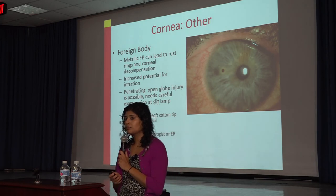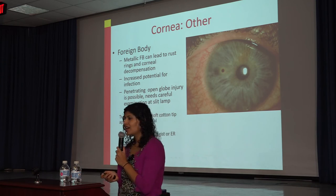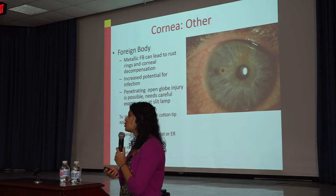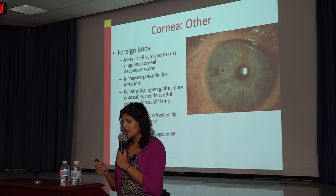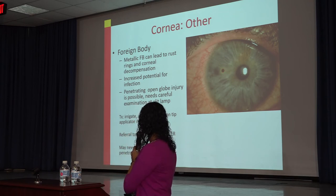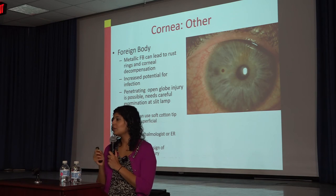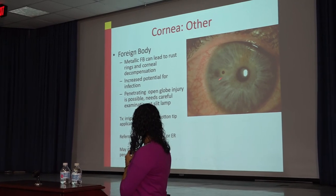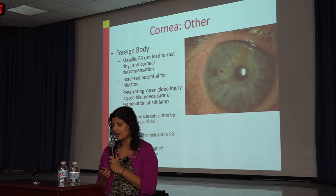Foreign bodies — someone working with a drill or metal without eye protection can embed a metallic foreign body in the cornea. The history is usually clear: they felt something go into the eye, and it's been red and watery ever since. Ophthalmologists remove the foreign body and burr out the rust ring using a small drill, because even after one or two days a rust ring can form and be harmful. Sometimes the foreign body has penetrated the eye and self-sealed, so it's worth exploring to ensure nothing is in the back of the eye.